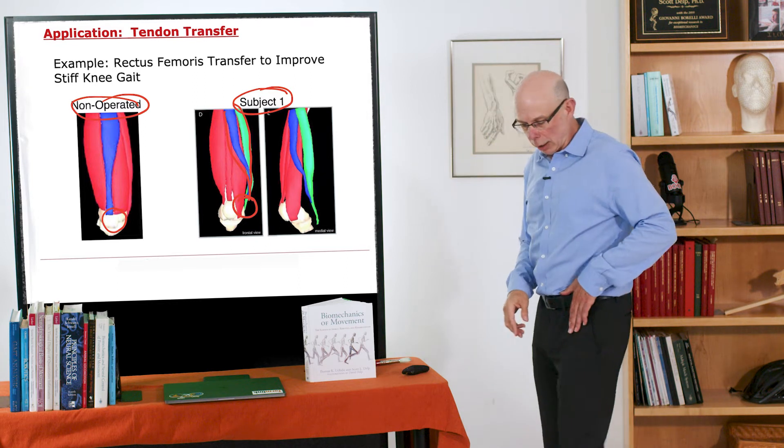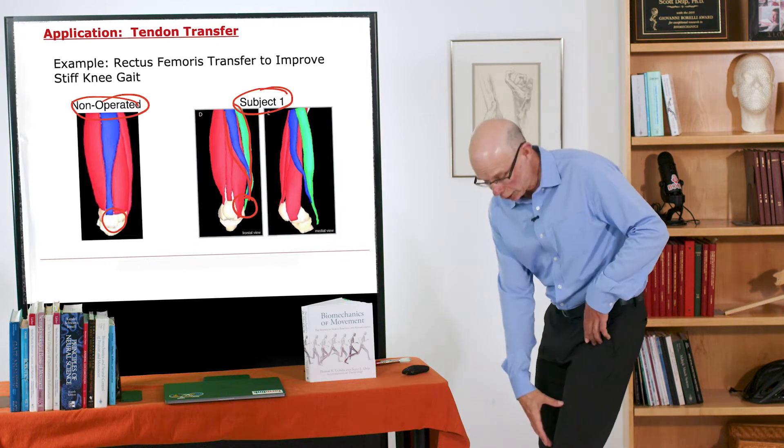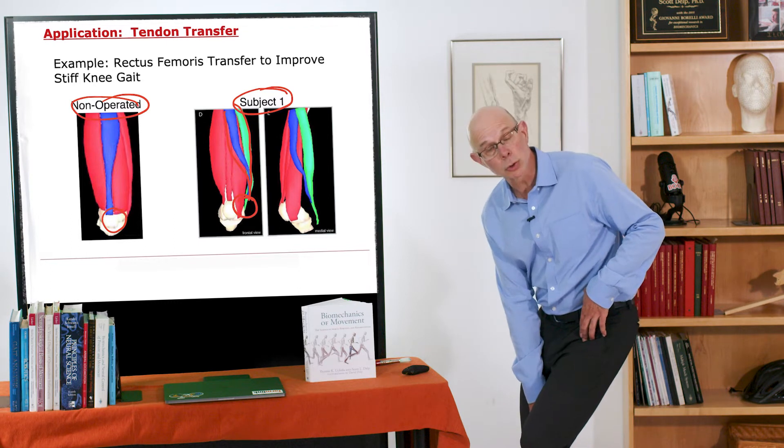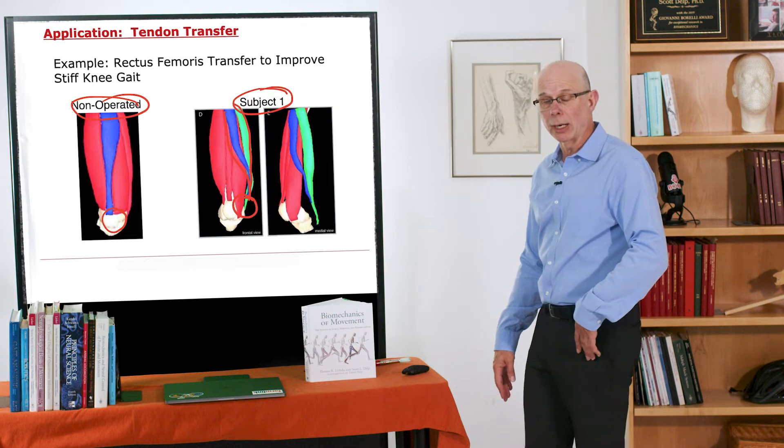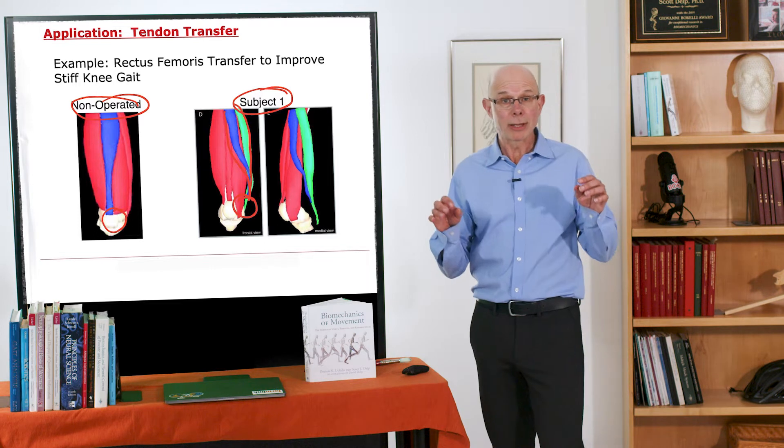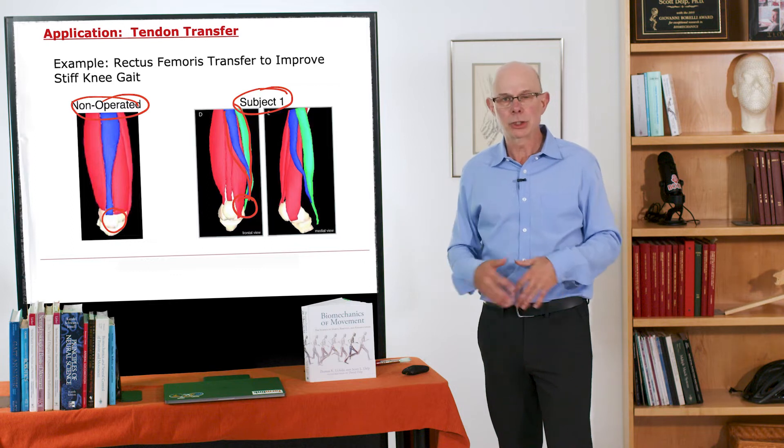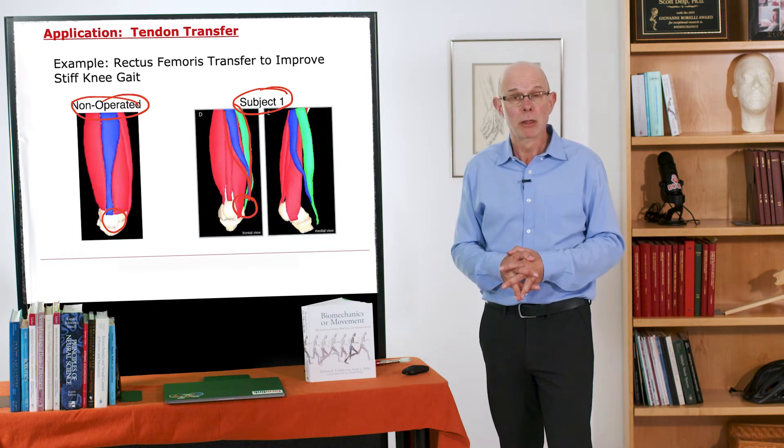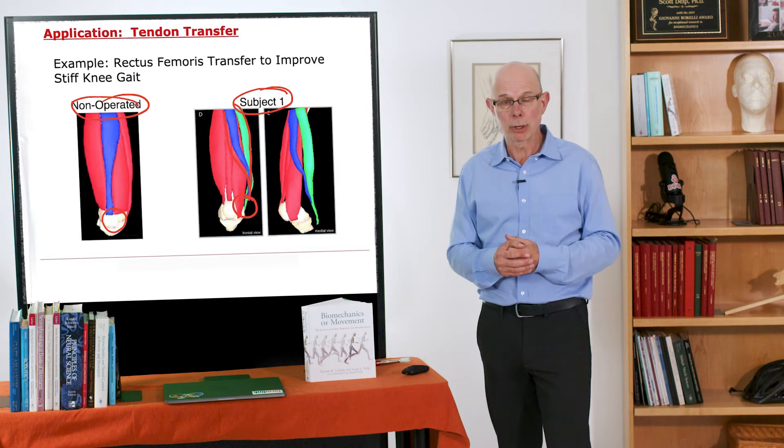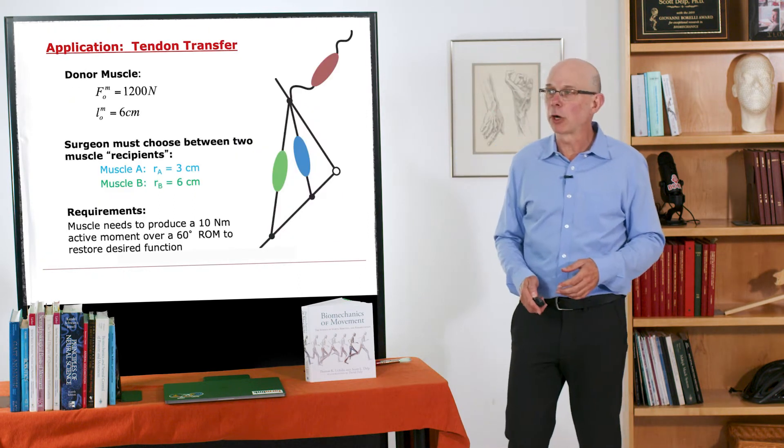So we're taking a muscle that crosses in front of the hip and generates a hip flexion moment and crosses in front of the knee. It's one of the quadriceps and generates a knee extension moment and hooking it to a muscle that crosses behind the knee. So now it should generate a hip flexion moment and a knee flexion moment. Well that's going to change how the muscle operates. It's going to change its moment arms. It's going to change its lengths. It's going to change its velocities. And therefore it's going to change the forces it can generate. Remember muscle force depends not only on its excitation but on its length and velocity as well. So let's analyze how this muscle function is changed.